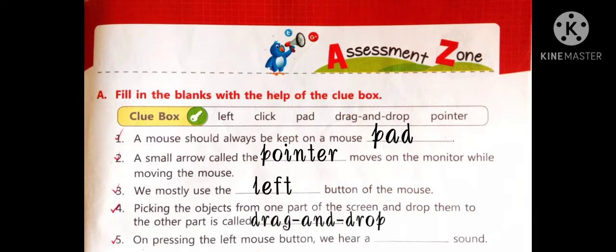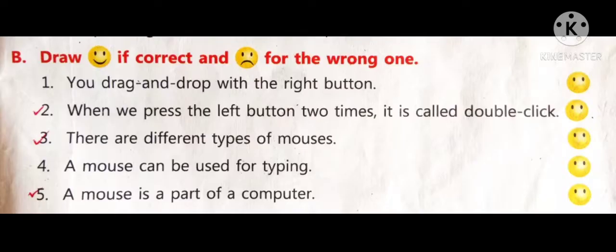Five number. On pressing the left mouse button, we hear a click sound. Now, B number.